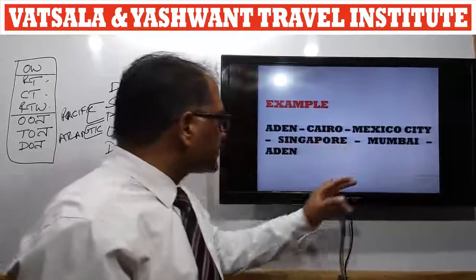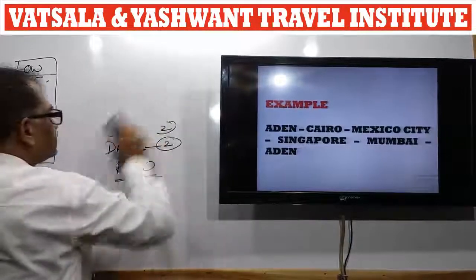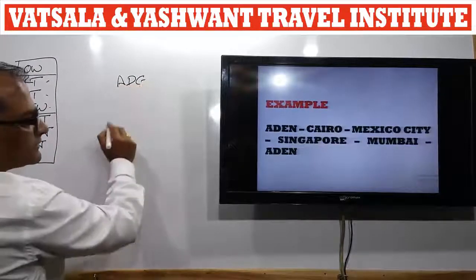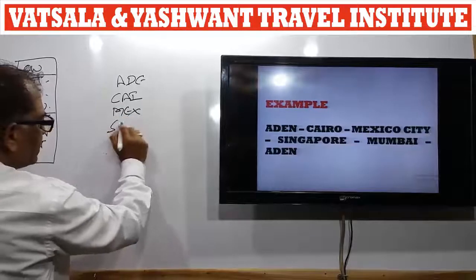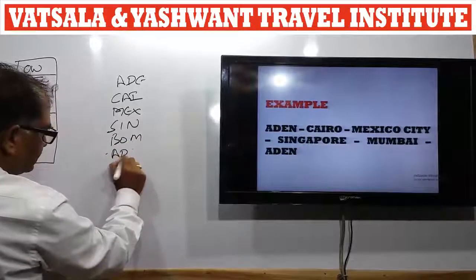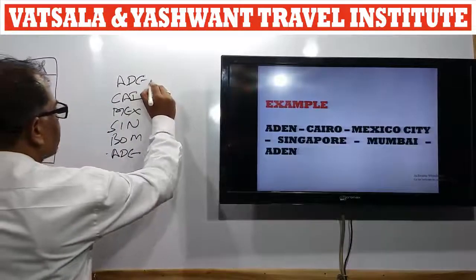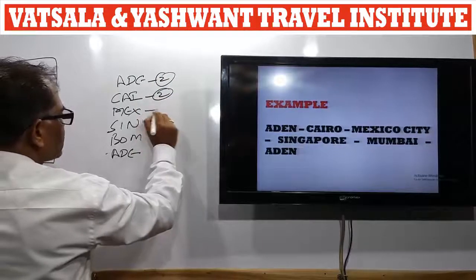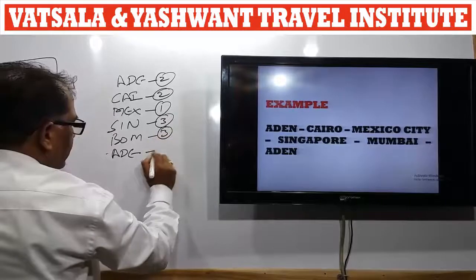Example 5 — the itinerary is: Aden → Cairo → Mexico City → Singapore → Mumbai → Aden. Aden is in Yemen, Area 2. Cairo is in Egypt, Area 2. Mexico City is in Mexico, Area 1. Singapore is in Singapore, Area 3. Mumbai is in India, Area 3. Aden is in Yemen, Area 2.